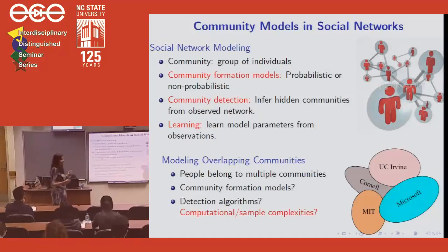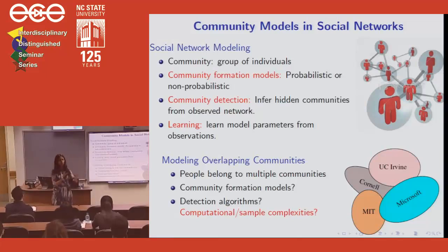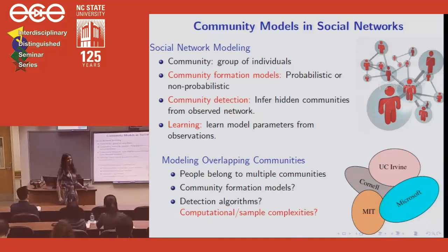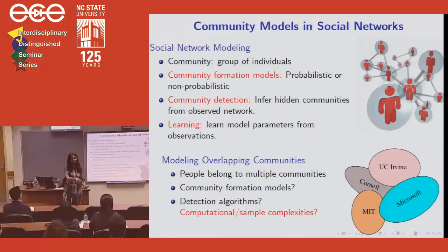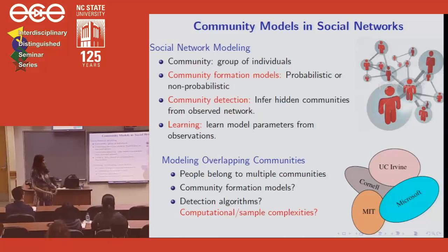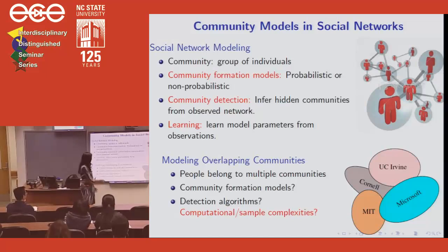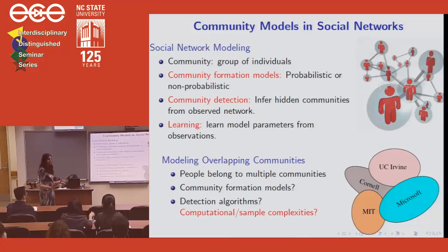The problem I'll emphasize is incorporating multiple communities for every person, or allowing communities to overlap. For instance, if you look at my Facebook list of friends, you can group them into different categories: family, high school friends, Cornell, MIT, UC Irvine, and Microsoft Research. So I belong to multiple networks or multiple communities. The question is: can we first come up with reasonable probabilistic models that incorporate overlap among communities, and yet learn them efficiently — just by looking at the edges of a graph?